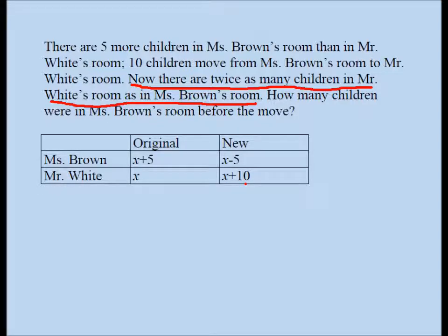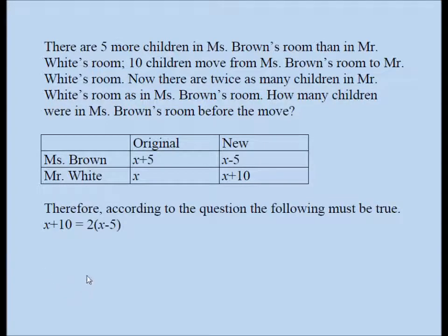What does that really mean? So the new scenario is Mr. White's classroom has twice as many children as Ms. Brown. Now sometimes students make a mistake and they flip these two expressions. Here they write X minus five and here they write X plus ten. That would be incorrect. A couple of ways to look at it. You can say Mr. White is two times Ms. Brown. That's exactly what this line says right here. Or you can say the larger number is two times the smaller number. All we need to do now is to solve this equation for X.